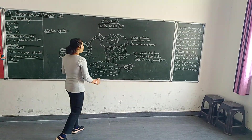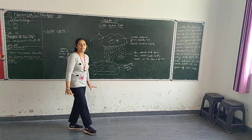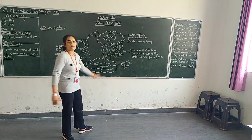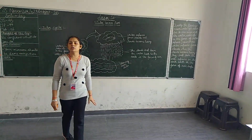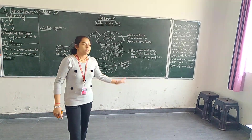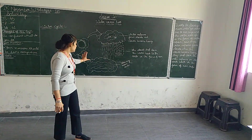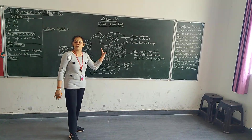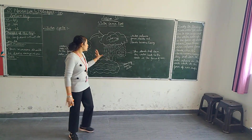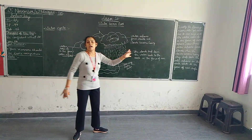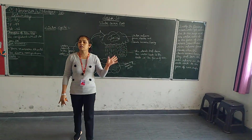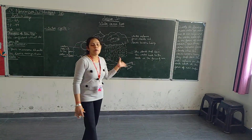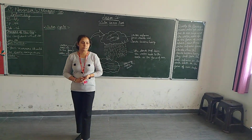Firstly, the flowing water in the river rises up in the form of water vapors due to the warmth of the sun. These water vapors that rose up then form clouds, and whenever these clouds feel heavy, they drop down the water in the form of rain.